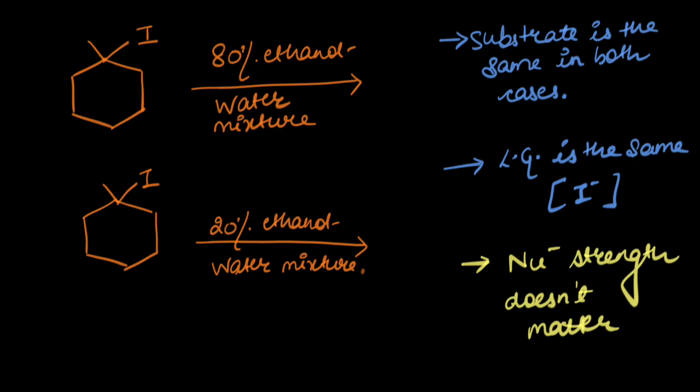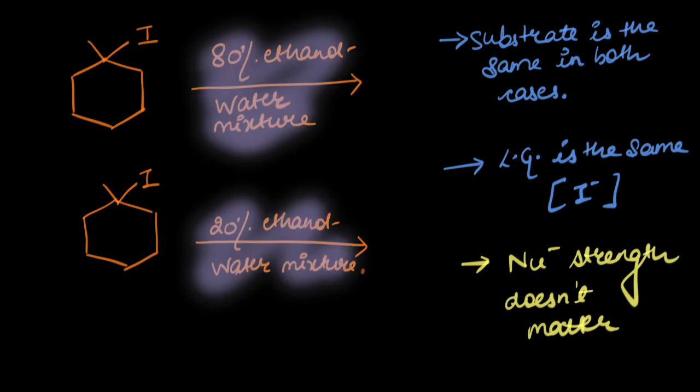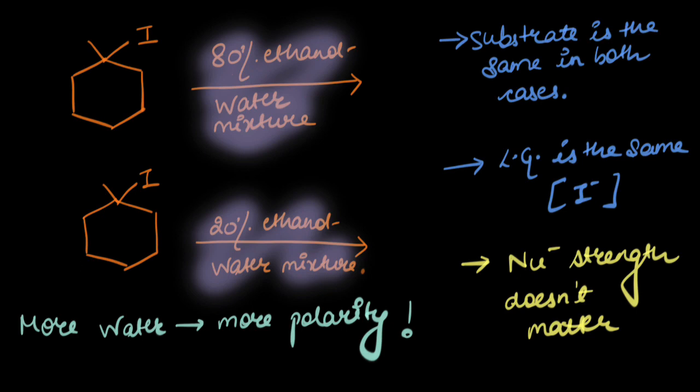The mixture looks a little different. In the first case, there's 80% ethanol and 20% water mixture. In the second case, I have 20% ethanol and 80% water in a mixture. It has something to do with the polarity. More water would mean more polarity. But how is it helping my reaction? Let's find out. Since the substrate is same in each case, the carbocation formed would also be the same. The leaving group is the same as well, I-.